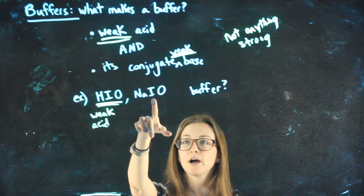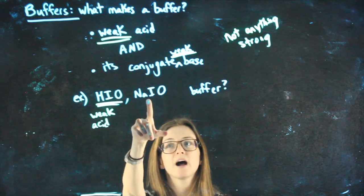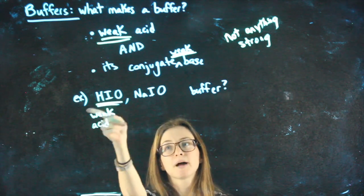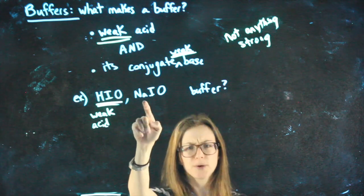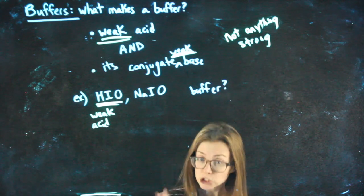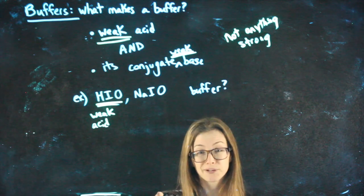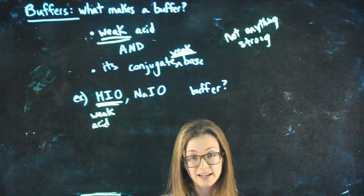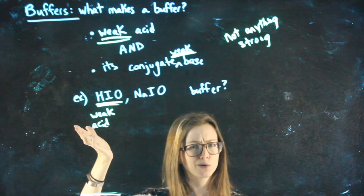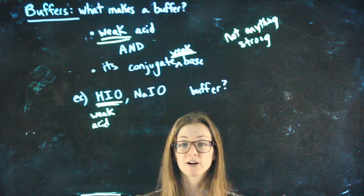So, if you then look at NaIO, you might say, ah, yeah, they're different by one H, but this one also has an Na, not a buffer. Generally, it would be good for you to realize that they're different by more than one H, different by an H and a sodium. So, they're not a conjugate pair as they currently are.